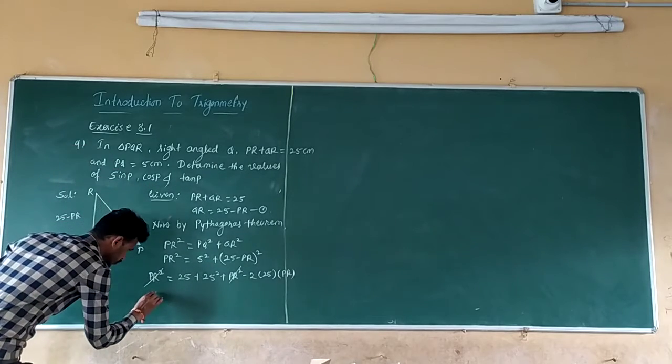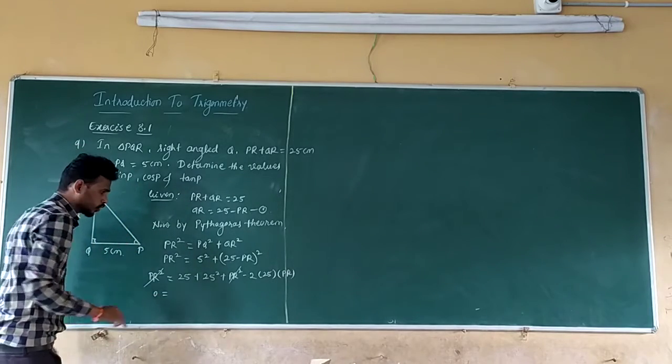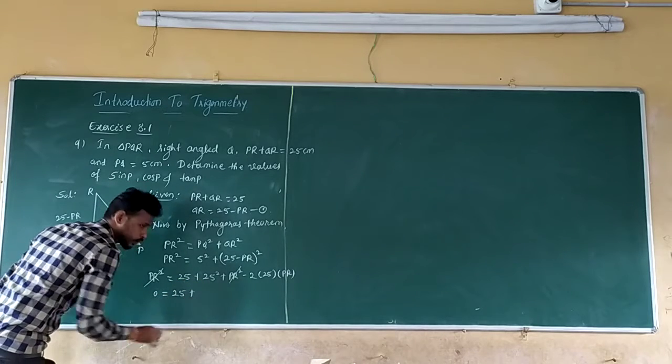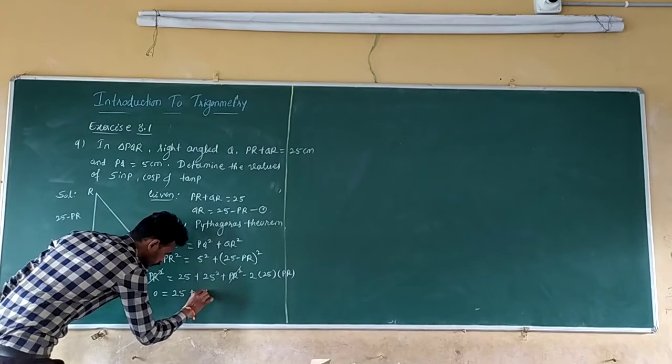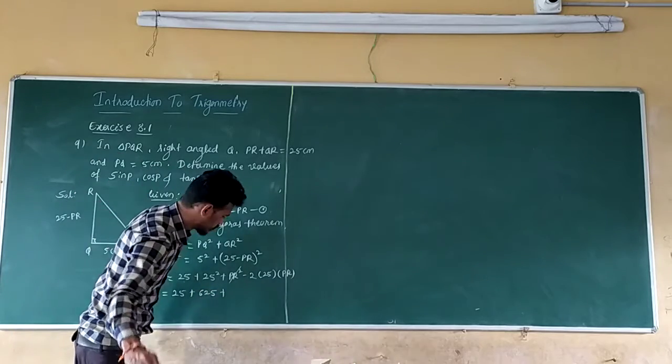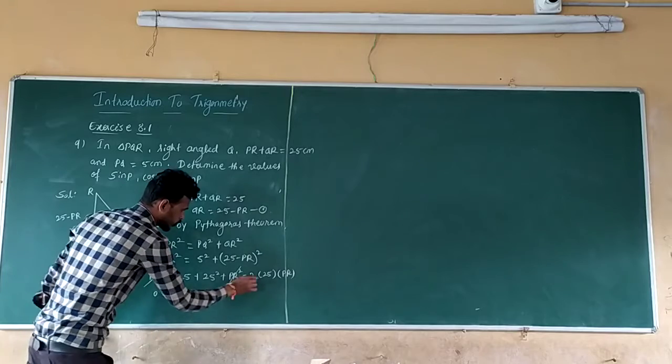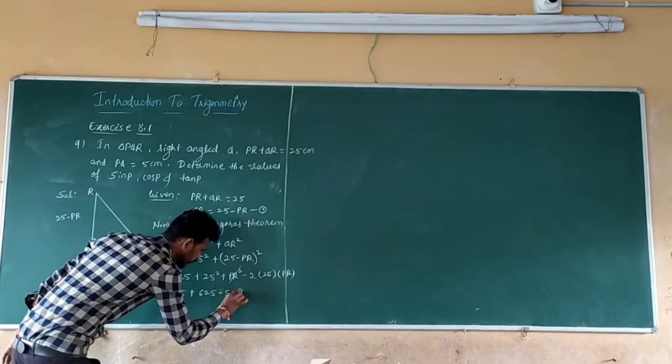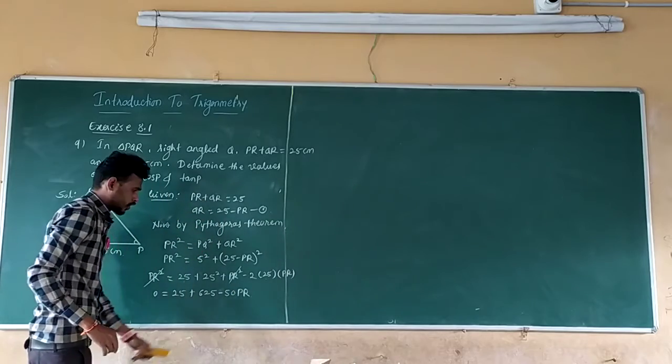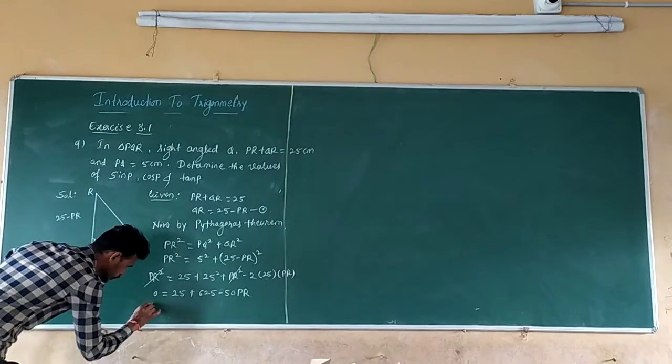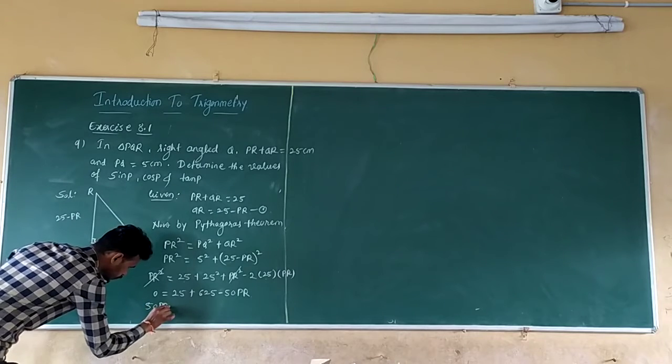So now which is equal to: 0 which is equal to 25 plus 25 squared, 625, minus 2 into 25, 50 PR. Now bring minus 50 PR to the left hand side and it becomes plus 50 PR. So 50 PR which is equal to 25 plus 625, 650.